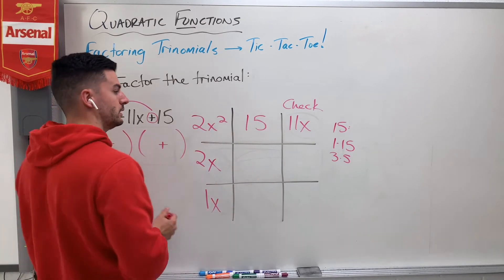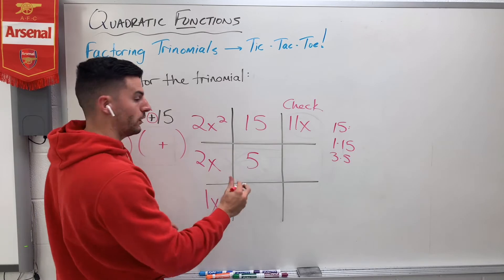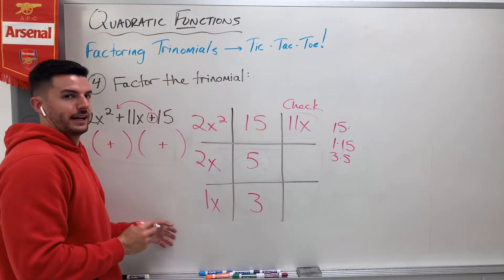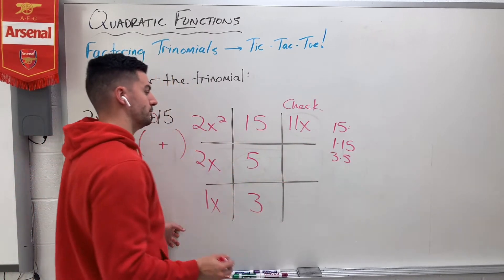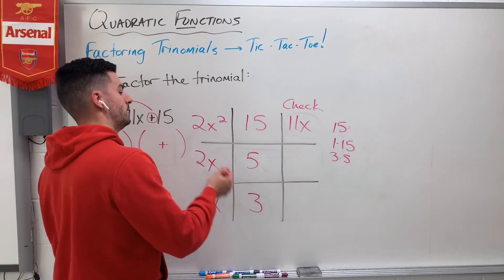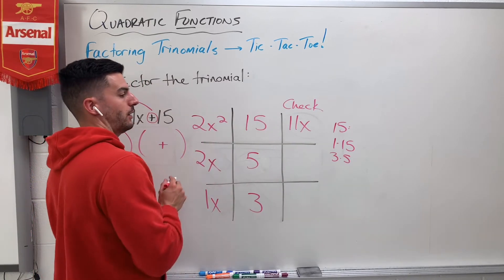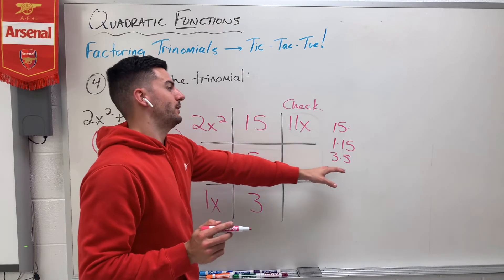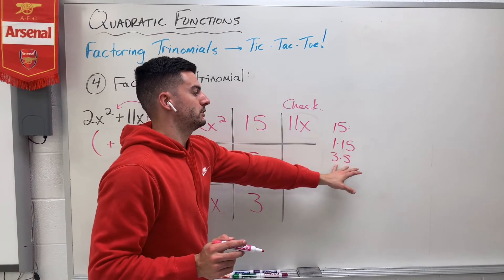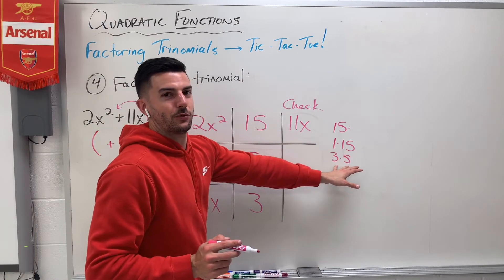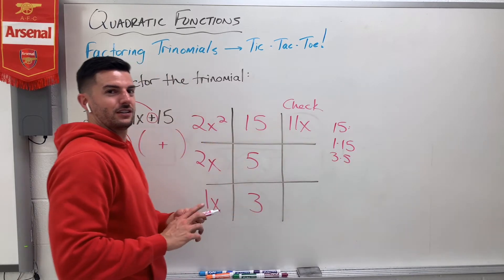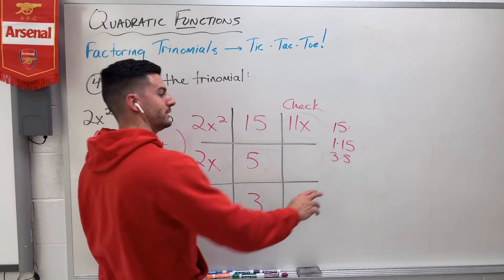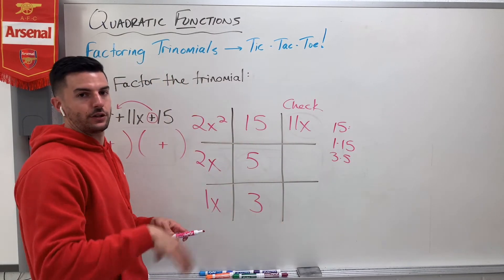I'll just pick one — let me go 5 and 3. Oftentimes I'll give you a clue here: if you have more than one group of factors, start with the one where the numbers are closest together. A lot of the time that ends up being it, but not always. That's a good place to start if you list out all your factors.